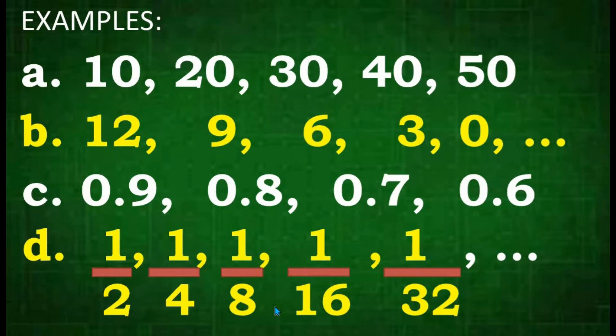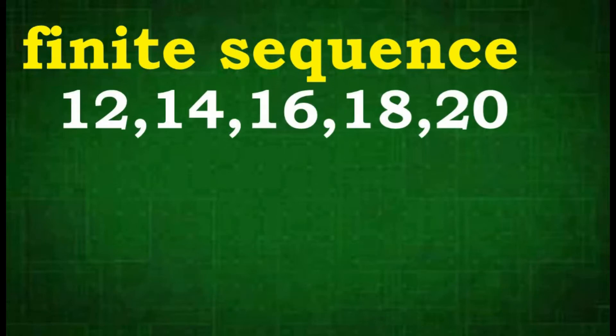The sequence may be written in descending or increasing order. Now we have separated the sequence into two groups. The first group is the so-called finite sequence. Finite sequences are sequences that contain a finite number of terms. For example: 12, 14, 16, 18, 20. In this sequence, we can determine the first and the last term, which are 12 and 20, meaning these are countable.